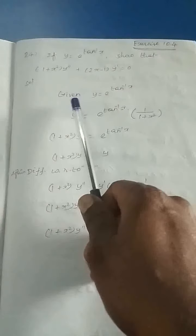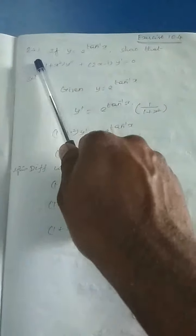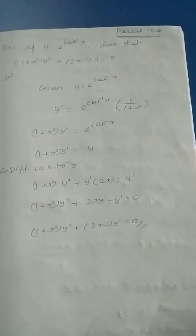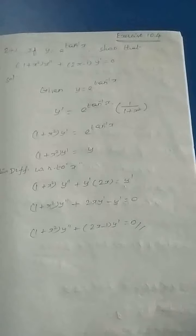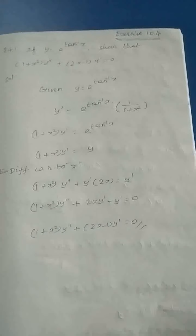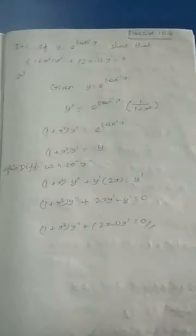Hi students, welcome to our math class. I start question number 24. If y equals e to the power tan inverse x, then show that (1 + x²)y'' + (2x - 1)y' = 0.